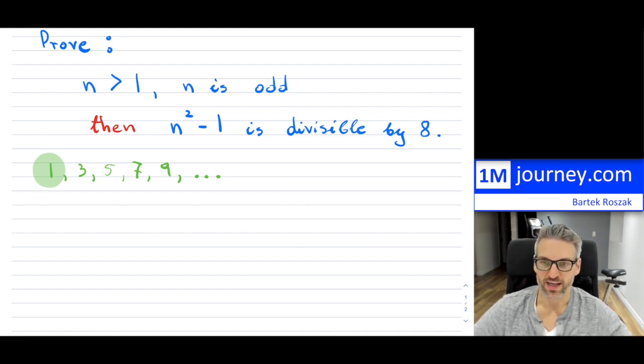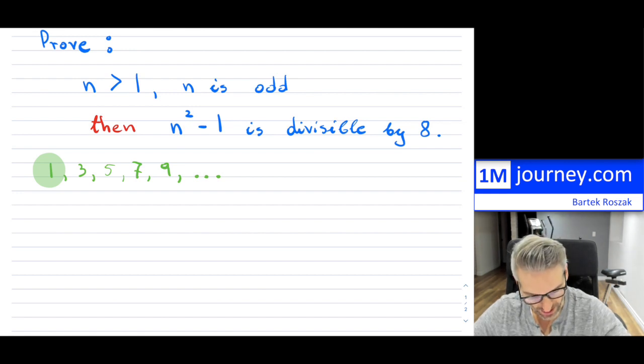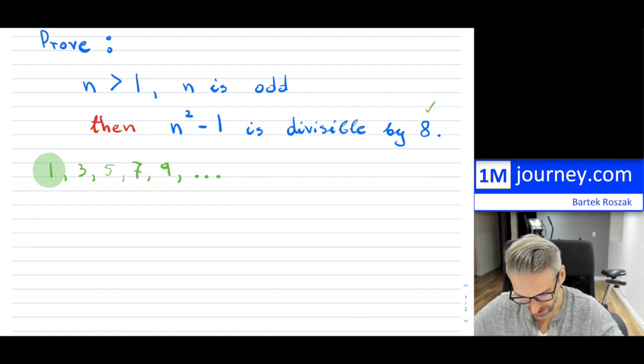Then if we take our odd number and we square it and we subtract 1, it's going to be divisible by 8. So just to give you a gist first, what this means.